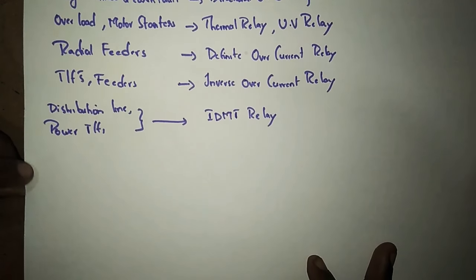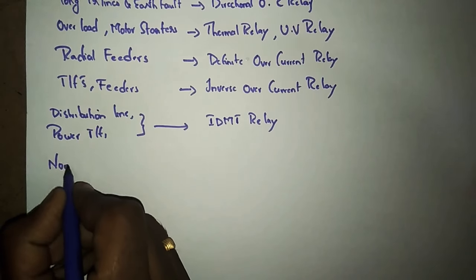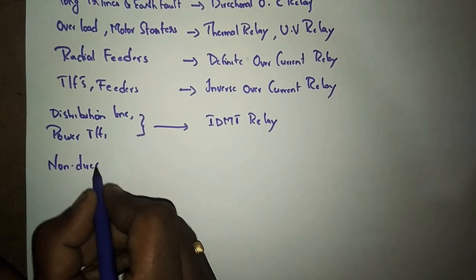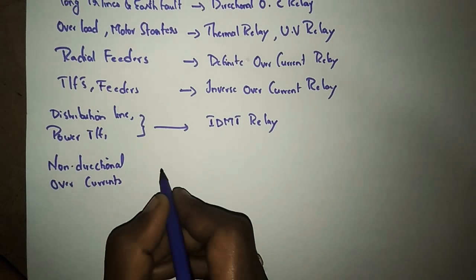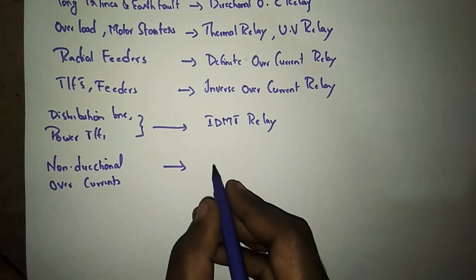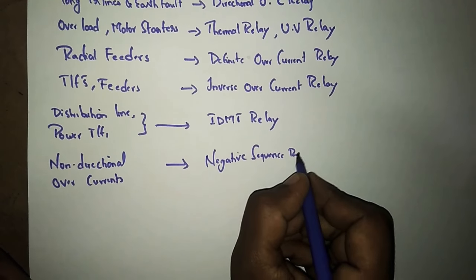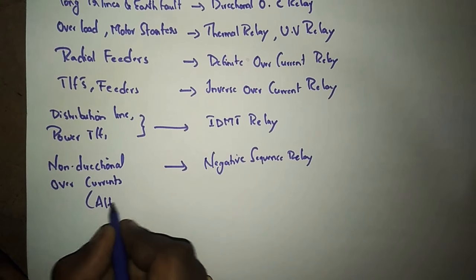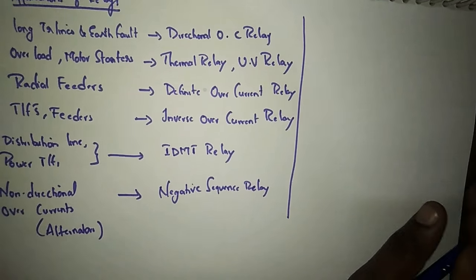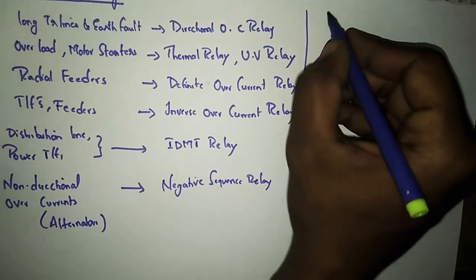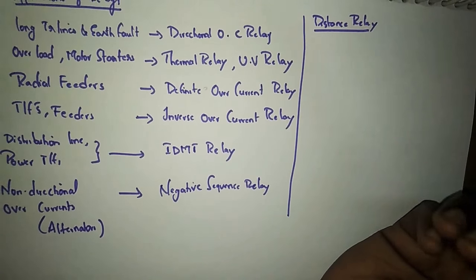For non-directional overcurrent which generally exists for alternators, we employ a negative sequence relay. For alternators we also go for distance relays, and this is also a very important topic from which severely asked questions come.